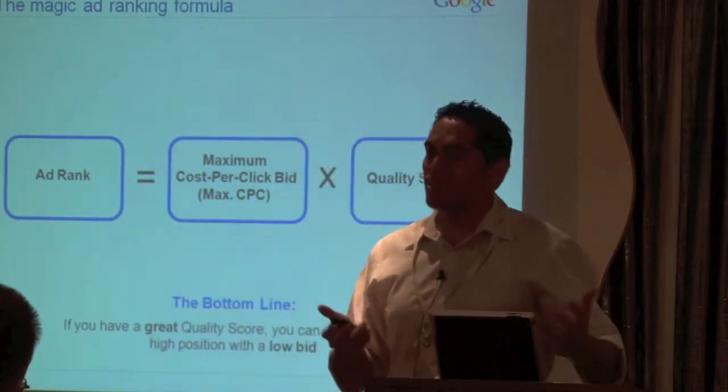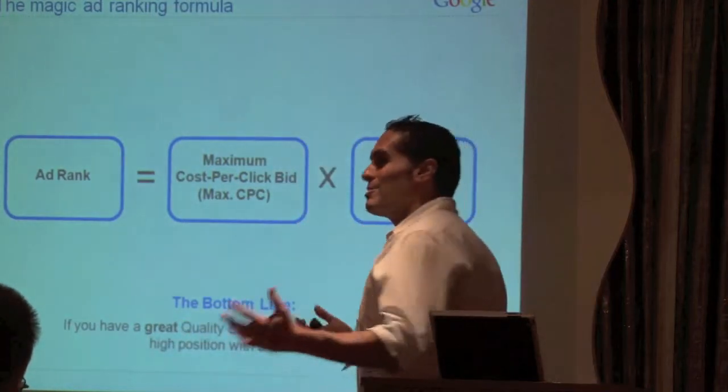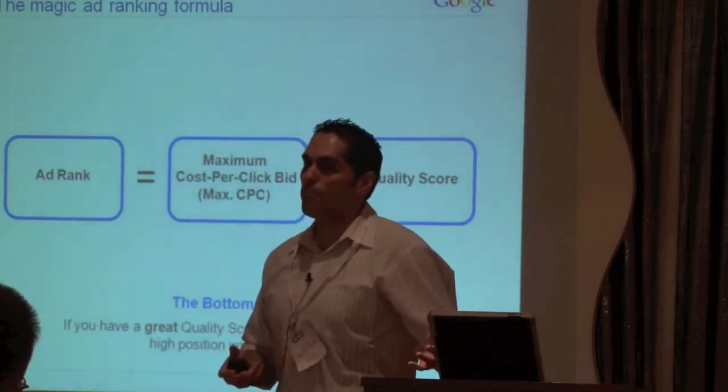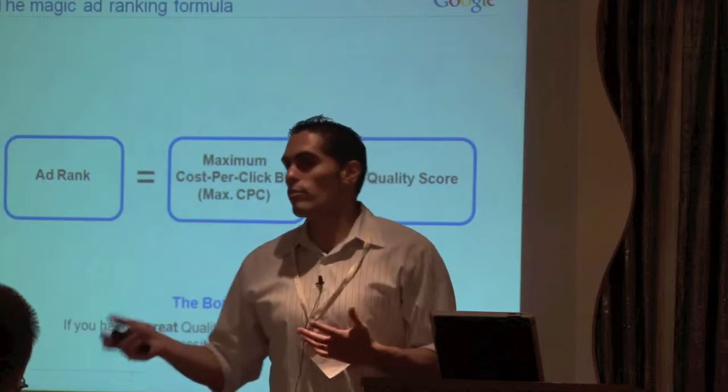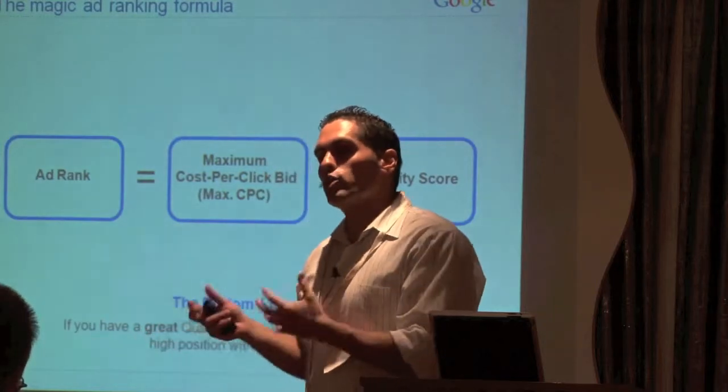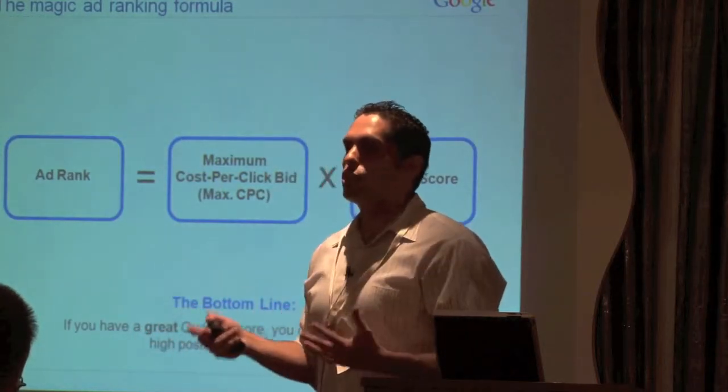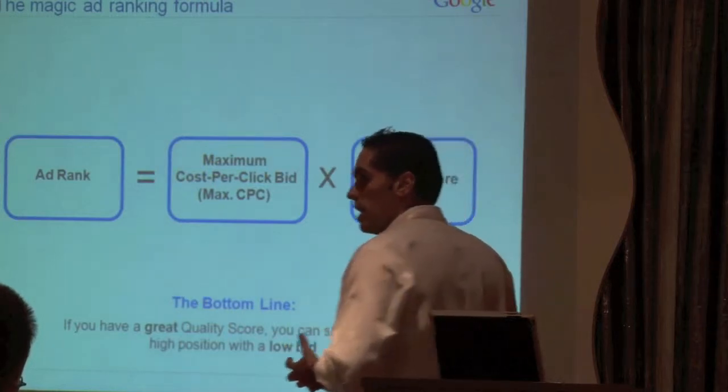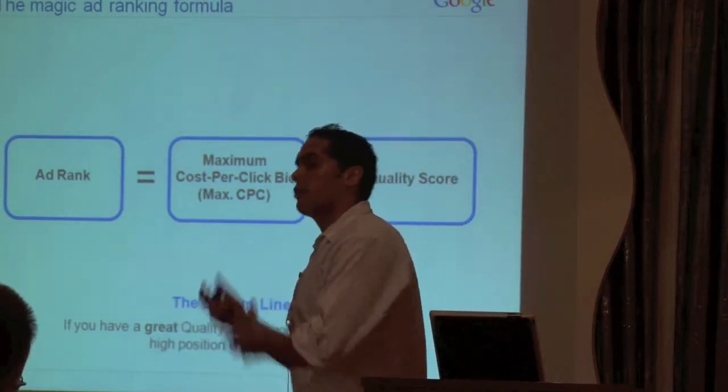I'm not saying Domino's is an Italian restaurant, but somebody searches for Pizza Belmore, right? Domino's most likely is going to show up, but Piccolo's, which is one of my favorite restaurants over there, they're able to show also because it's not just about what you want to spend, it's also about the quality of your ad, the quality of your keywords, the quality of your website.